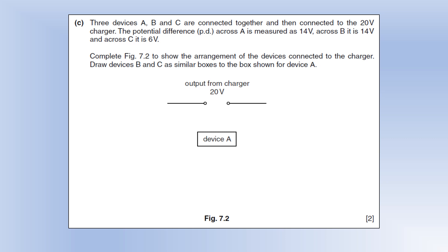Three devices A, B, and C are connected together and then connected to the 20 volt charger. Potential difference across A is 14, across B is 14, and across C is 6. Draw a diagram to show the arrangements. The first thing I spot is the potential difference across A and B is the same, which must mean they are in parallel with one another.